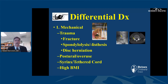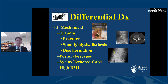Here's an example of a spondylolysis — you can see the arrow pointing to a stress fracture of the lamina and pars interarticularis on this x-ray. And this is an example of a spondylolisthesis where the L5 vertebral body has slipped forward on the sacrum. Both of these conditions tend to cause back pain.